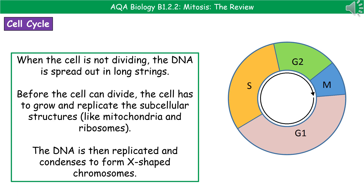When the cell isn't dividing, the DNA is actually spread out in really long strings — kind of like a whole load of string rubbed together in a big messy knot. Before the cell can undergo division, it's going to have to grow and replicate all subcellular structures, things like the mitochondria and ribosomes, which are vital to the cell's functioning. They've all got to be replicated before the cell can divide because each new cell is going to need them.